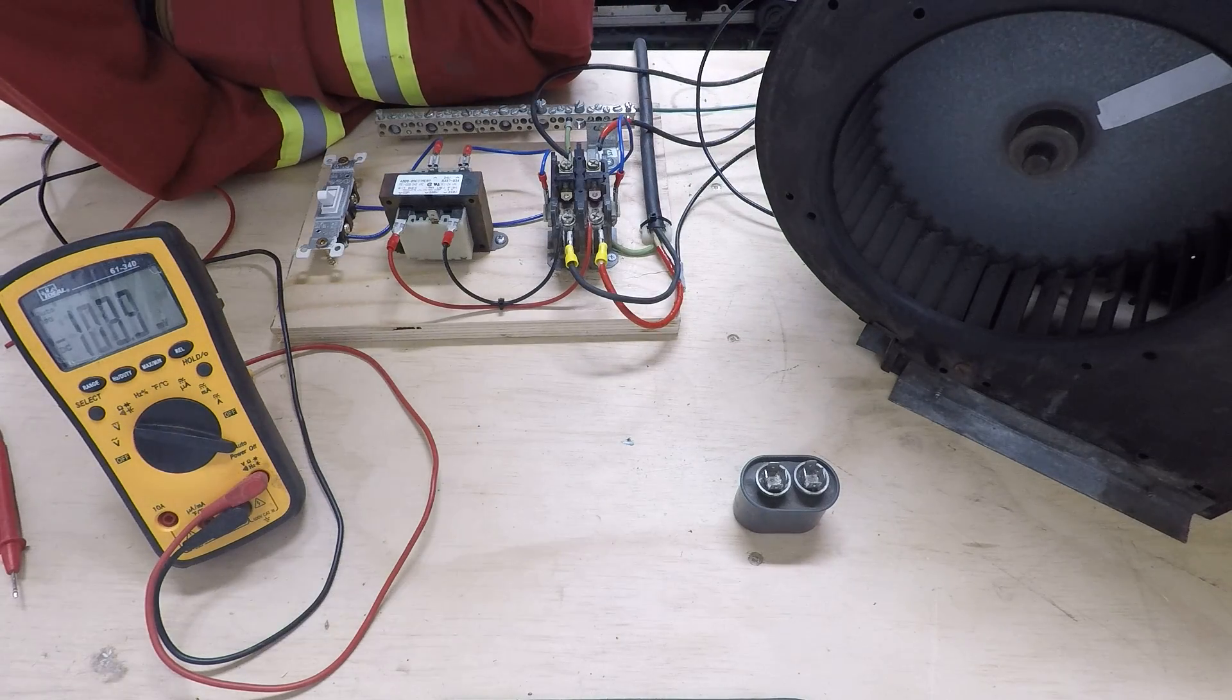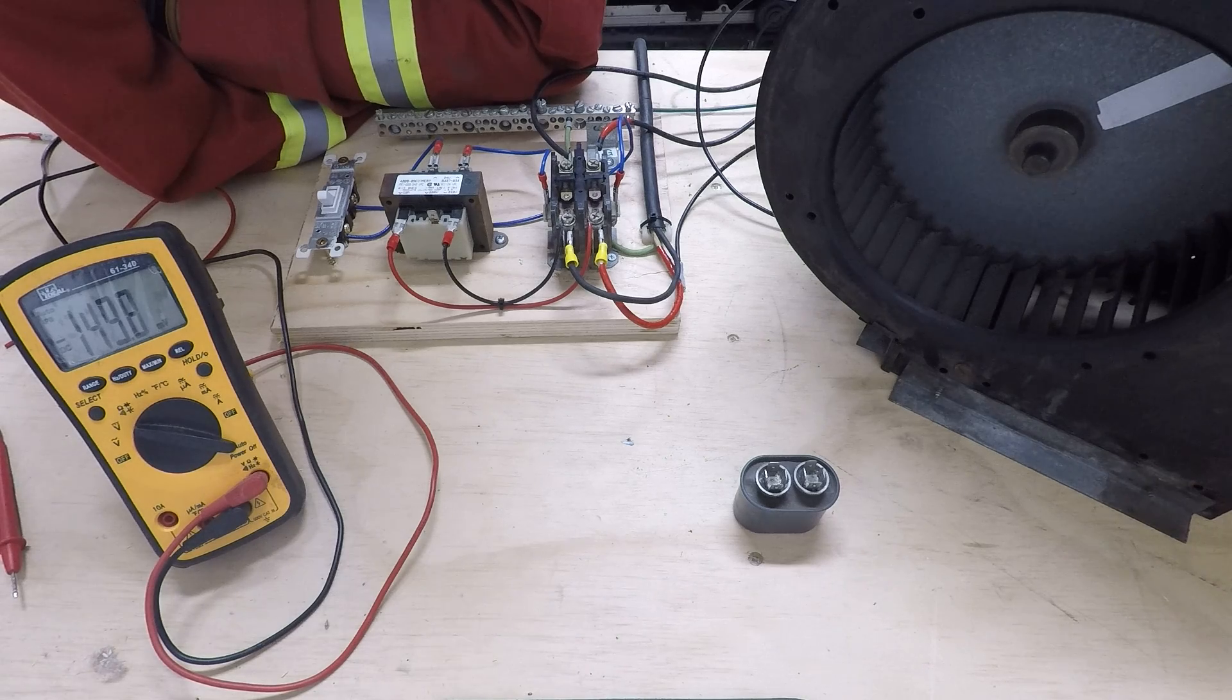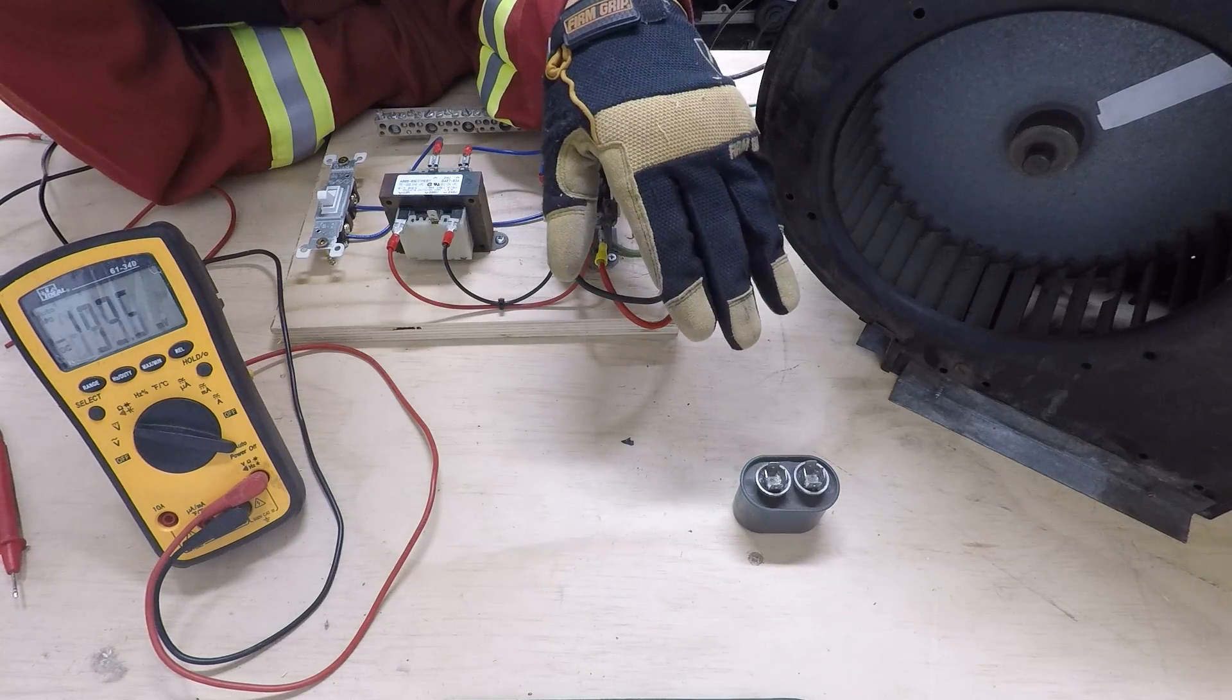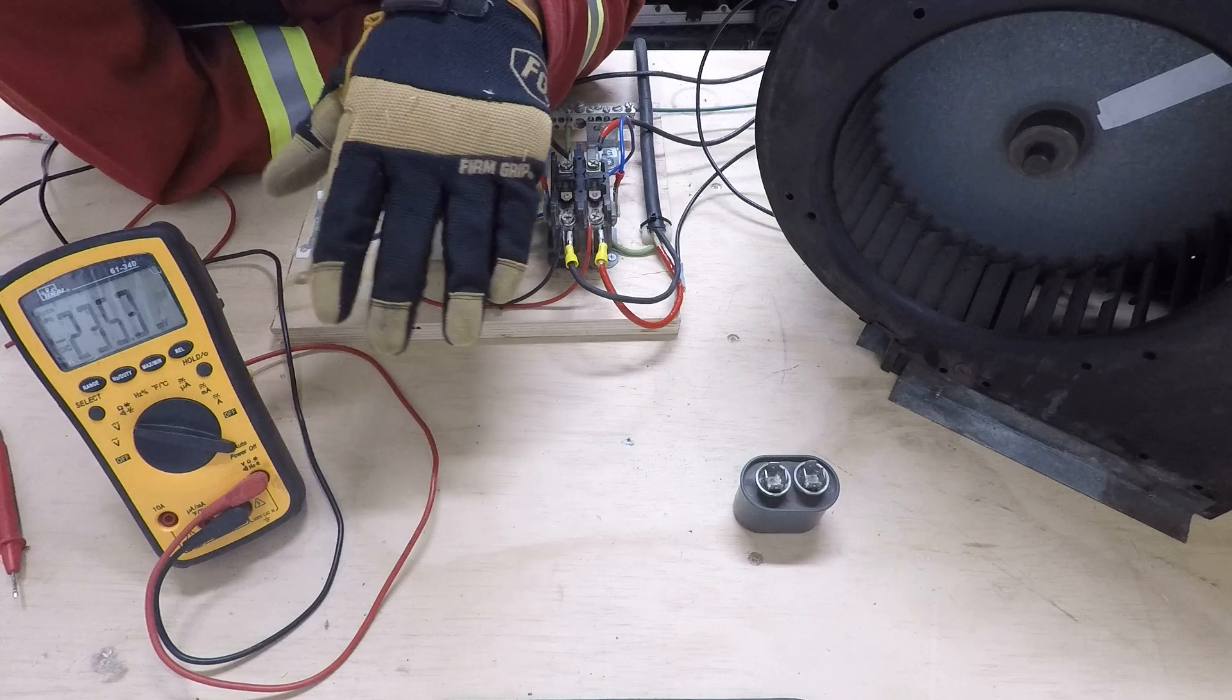So you always want to treat a capacitor as if it's storing a charge. You take your multimeter, you've got to measure for voltage, and if it's holding a charge, I don't recommend using the shank of a screwdriver.